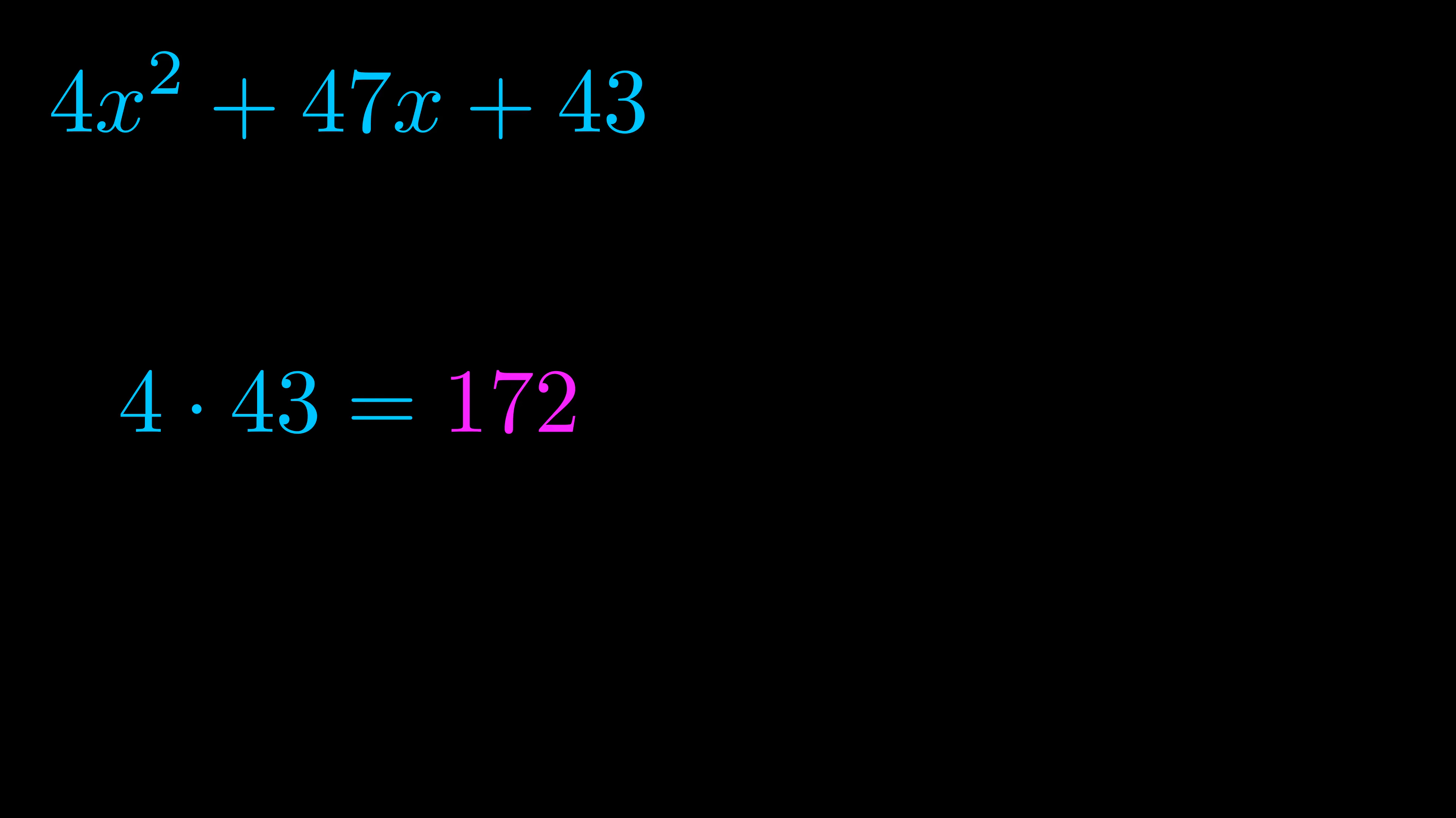Step two is to try to find all of the pairs which multiply to this number. Now it turns out you don't really need to find all of them but go ahead and write down as many numbers as you can that multiply to the magenta value for now.